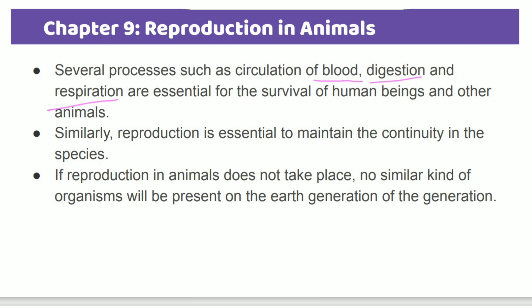In this lesson, we have a different process of reproduction. We want to maintain the continuity of the species. If reproduction in animals does not take place, similar kinds of organisms will not be present on the Earth for the next generation.